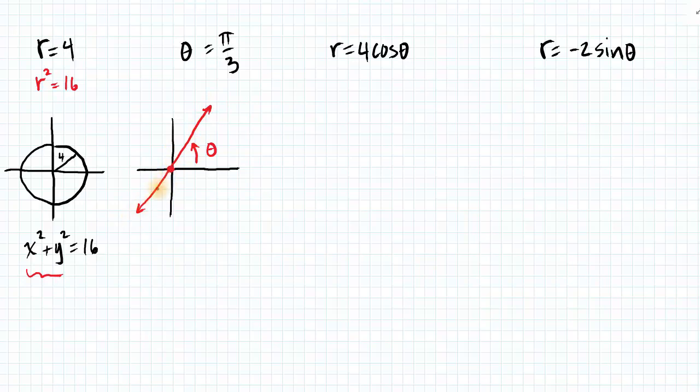And when r is negative, we are going to be plotting these points in quadrant 3. So theta equals pi over 3 is a line through the origin. If we wanted the equation for that line, we know that the equation for a line through the origin is mx, the b is 0. So we just need the slope of this line.